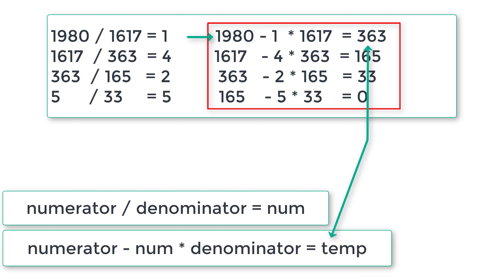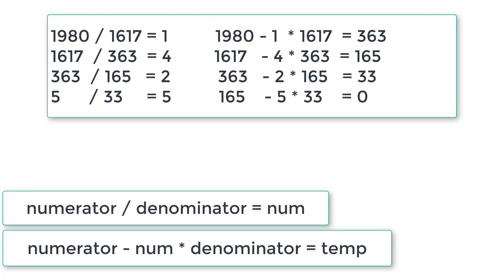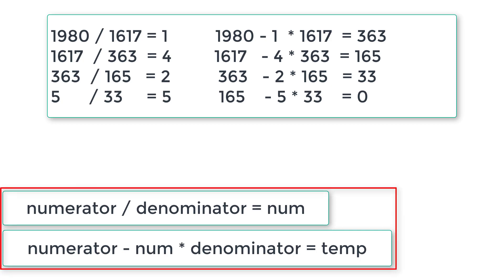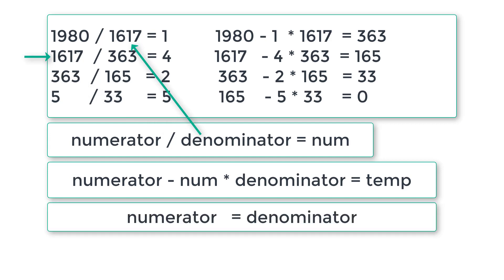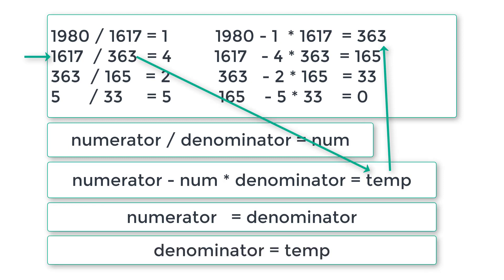So we have two formulas. Write these down — these are the things upon which we will be writing our C program logic. Moving to the second column: the denominator has been shifted to numerator's place, so numerator equals denominator. And 363, which is present inside temp, gets transferred to denominator.